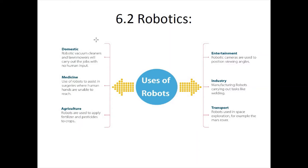In the entertainment industry, robotic cameras are used to position viewing angles, such as robotic drones and automatic drones. In industry, manufacturing robots carry out tasks such as welding the parts of a car frame together. In transport, robots are used in space exploration — for example, the Mars Rover and many other rovers sent out into space.